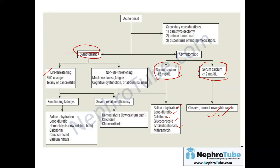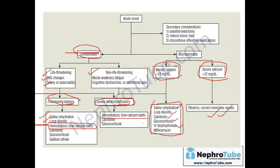If symptomatic, it depends on whether symptoms are life-threatening or not. For non-life-threatening symptoms, use medical measures. For life-threatening presentations such as ECG changes, severe pancreatitis: if renal function is normal, use medical measures plus hemodialysis if not responding. If there is renal insufficiency, IV saline cannot be used freely and loop diuretics are of limited benefit, so hemodialysis with low-calcium dialysate may be the first choice, along with calcitonin and glucocorticoids.